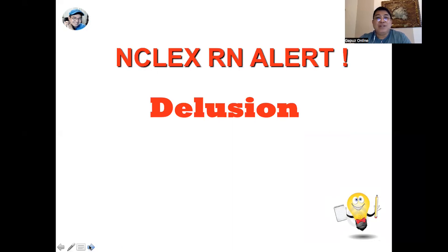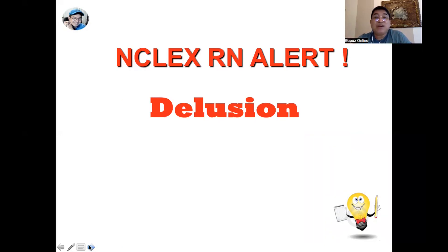Our last concept for this set is delusions. A delusion is a false belief not expected of a person's level of education — this false belief is usually fixed. It is related to the most severe form of psychosis, schizophrenia, as well as mood disorders, and you might be surprised — some clients with Parkinson's disease also have delusions. Delusions are primarily treated with antipsychotics and antidepressants.